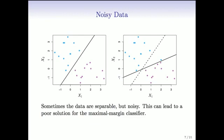Another problem we're going to want to deal with is when you have noisy data. Here we've got our original data, and it's not too noisy, and we get a hyperplane. What happens if we add one more blue point? Just the presence of that one extra point means we've had to tilt the hyperplane quite dramatically to still get separation. That's non-robust behavior to the addition of one extra point — this point might be an outlier, and it's going to have a dramatic effect on the maximal margin classifier.